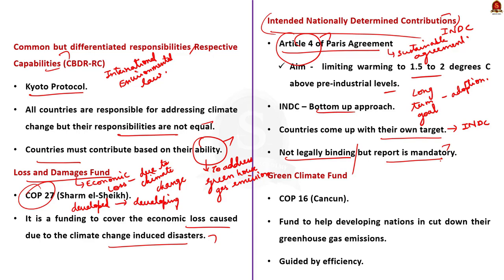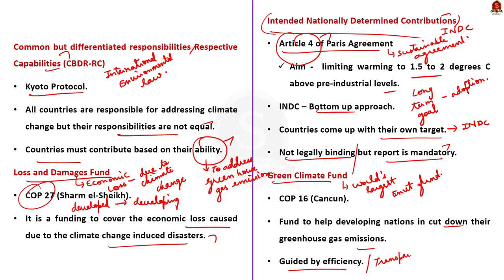The last term is the Green Climate Fund (GCF). The GCF is the world's largest environmental fund that seeks to help developing nations in cutting down their greenhouse gas emissions and also helps them adapt to climate change. The Green Climate Fund operates in a transparent and accountable manner guided by efficiency and effectiveness. It was established at COP16 in Cancun. Now let us move on to the next question.